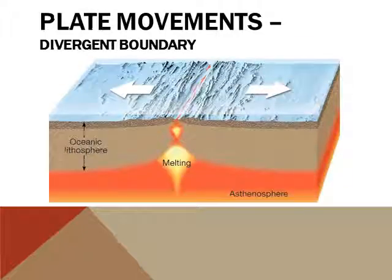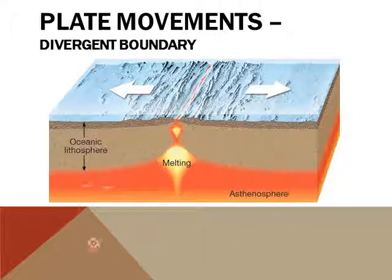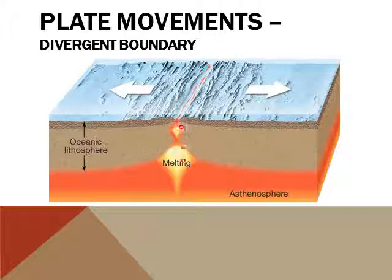The first type of boundary is a divergent boundary. Basically what happens here is you get oceanic crust and oceanic crust that separate away from each other. You get a convection current on one side that goes clockwise and another convection current on the other side that goes counterclockwise. In that process, the convection current will push the plate to the left on one side and to the right on the other side, which will separate the two in the middle. This type of boundary only occurs between oceanic crust.